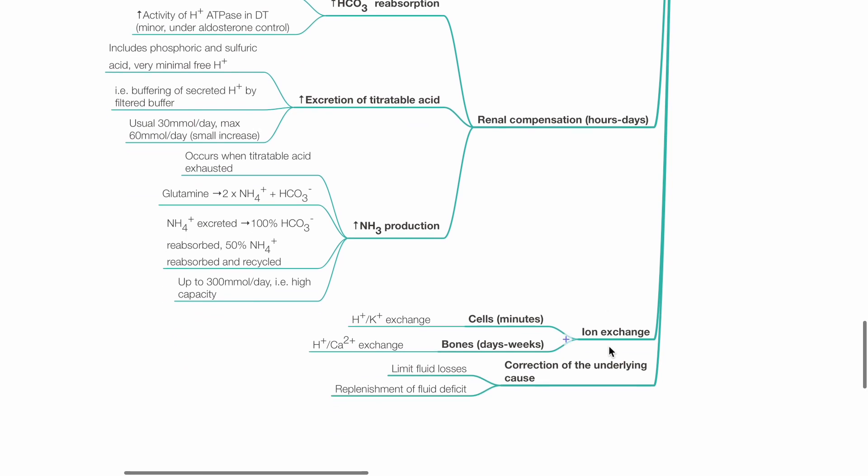Ion exchange: Hydrogen and potassium ion exchange occurs in cells. Hydrogen and calcium ion exchange occurs in bones.